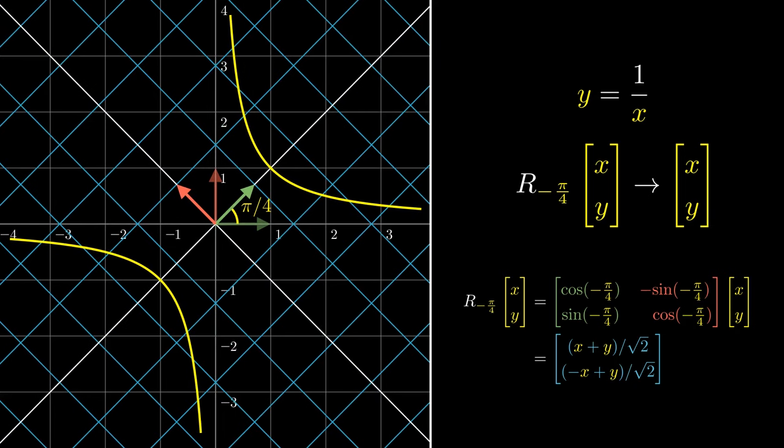we will get the equation y equals to 1 over x. Which is precisely the graph that we obtain after we rotate the original hyperbola.